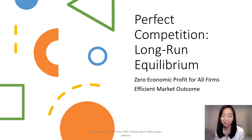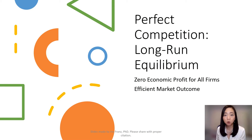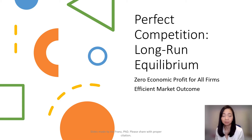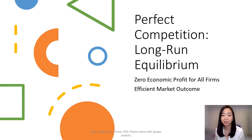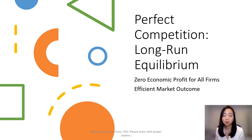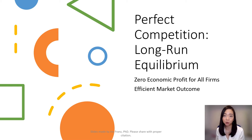Hello everyone, Professor Franz here. Today we're going to talk about the long-run equilibrium of perfect competition. In this clip, I'm going to explain why in the long run all firms are making a zero economic profit, and second, why the market outcome for perfect competition in the long run is efficient.